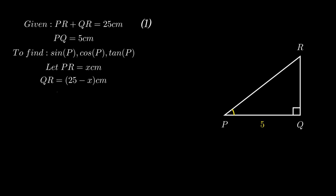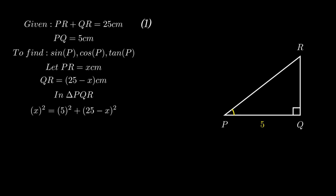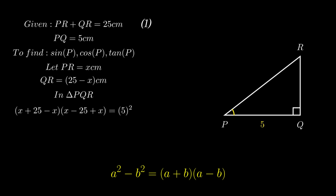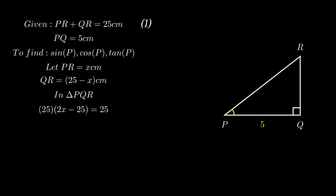Using the Pythagorean theorem in triangle PQR, PR squared equals PQ squared plus QR squared. Putting in corresponding values, X squared equals 5 squared plus (25 minus X) squared. Transposing gives X squared minus (25 minus X) squared equals 25. Using the identity A squared minus B squared equals (A plus B)(A minus B), we get (X plus 25 minus X)(X minus 25 plus X) equals 25, which simplifies to 25 times (2X minus 25) equals 25. Simplifying gives 2X minus 25 equals 1, so 2X equals 26, therefore X equals 13.